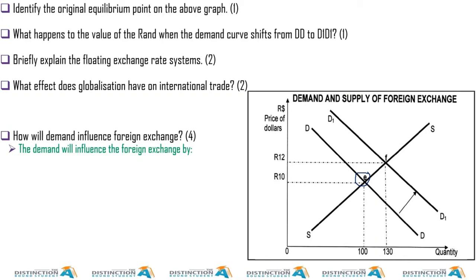This is demand and supply of foreign exchange, or foreign currency. We have 100 units and 130 units. There is an increase in demand, and we see this movement from 10 to 12. This is the rand against the dollar — the demand for foreign currency has increased, and the supply of foreign currency has stayed the same.